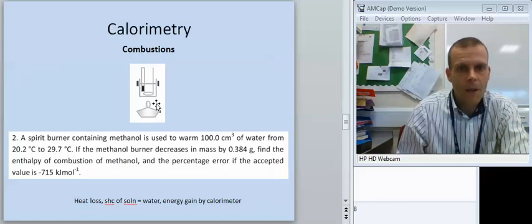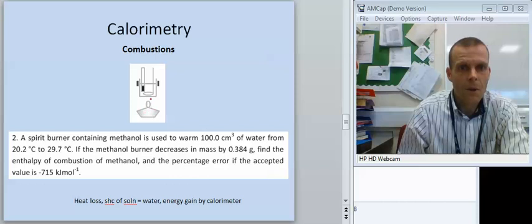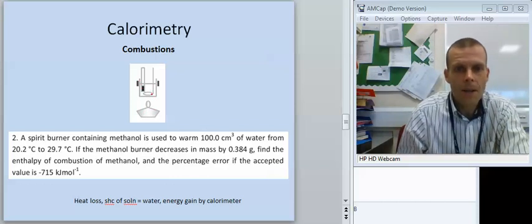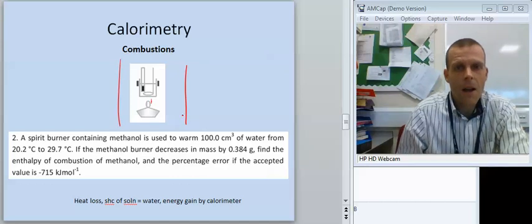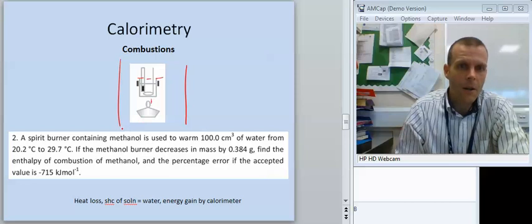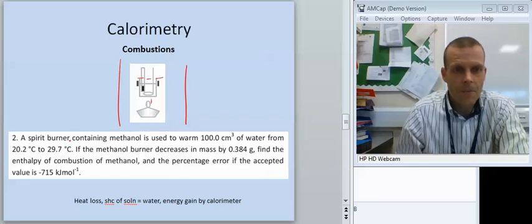The other type of enthalpy change that we need to look at is where we're doing a combustion reaction. So we've got a spirit burner here, we've got a calorimeter, and dipping into that, we've got a thermometer, and I've got a stirrer in there as well. I'm trying to minimize this distance here, keep this as small as possible. All the time I'm trying to minimize heat loss, and it might be that I have a draft shield around it as well to stop some of the heat being transferred away, and ideally maybe have a lid on top of that too. So anything I can do to minimize heat loss, the systematic errors, will improve the data that I get.